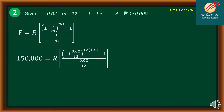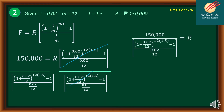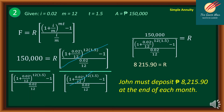Since we are looking for R, we apply the future value formula F = R × [(1 + I/M)^(MT) − 1] / (I/M) and substitute the given values. We then divide both sides by the expression [(1 + 0.02/12)^(12 × 1.5) − 1] / (0.02/12), isolating R. This gives R = 100,000 / {[(1 + 0.02/12)^18 − 1] / (0.02/12)}. Using a calculator, R = 8,215.90. Therefore, John must deposit P8,215.90 at the end of each month.